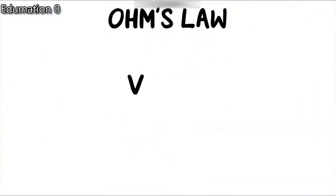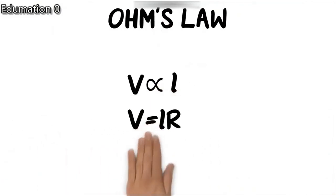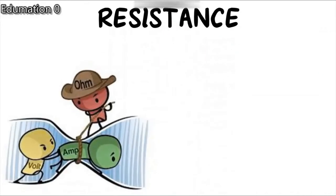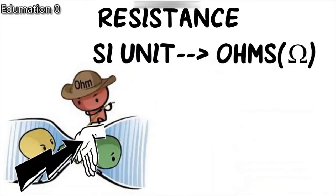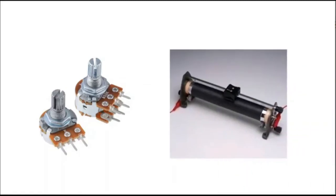Ohm's law states that potential difference between two points is directly proportional to the electric current at a constant temperature. This gives us V is equal to I into R, where R is the constant. R stands for resistance. Resistance is a property of a conductor due to which it resists the flow of electric current through it. The SI unit of resistance is ohms, denoted by the Greek letter omega (Ω). The component of an electric circuit used to regulate the current without changing the voltage from the source is called variable resistance. A rheostat is a device used in a circuit to provide variable resistance.